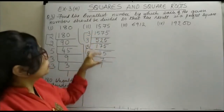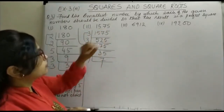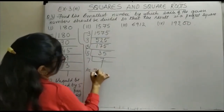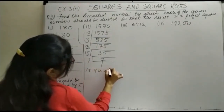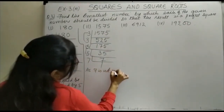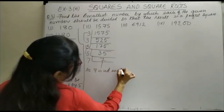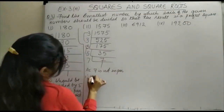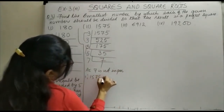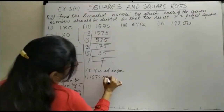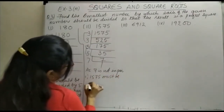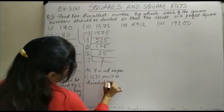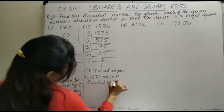Since 7 is not in a pair, therefore 1575 must be divided by 7 to make it a perfect square.